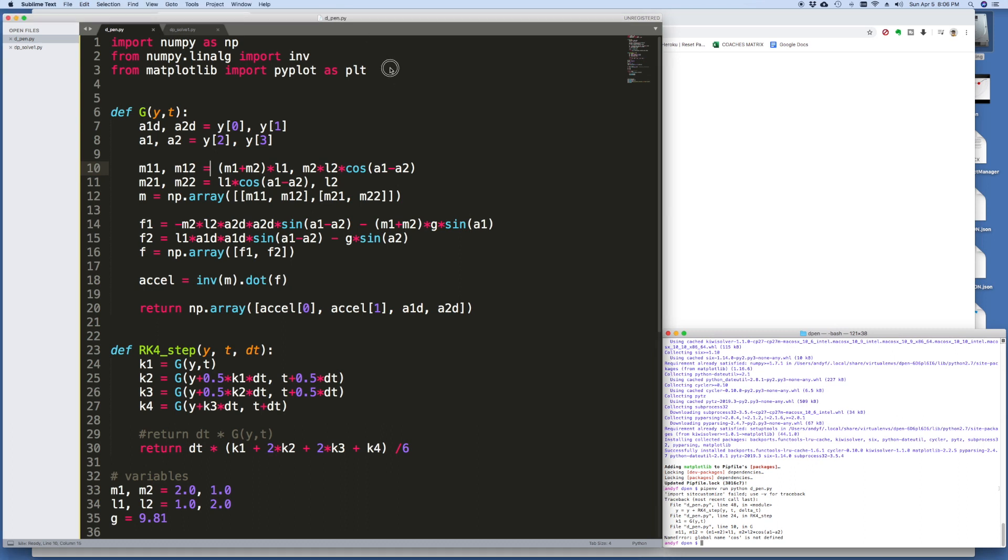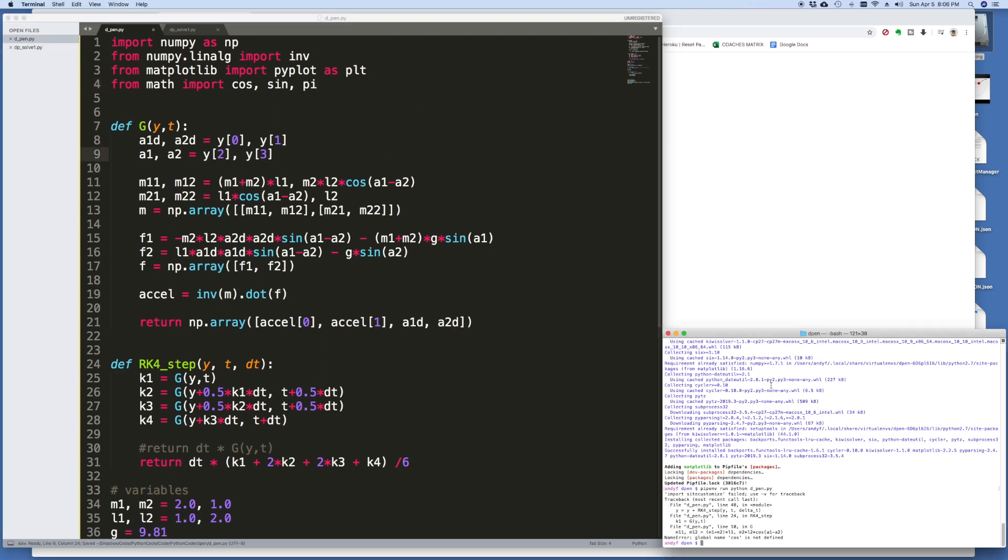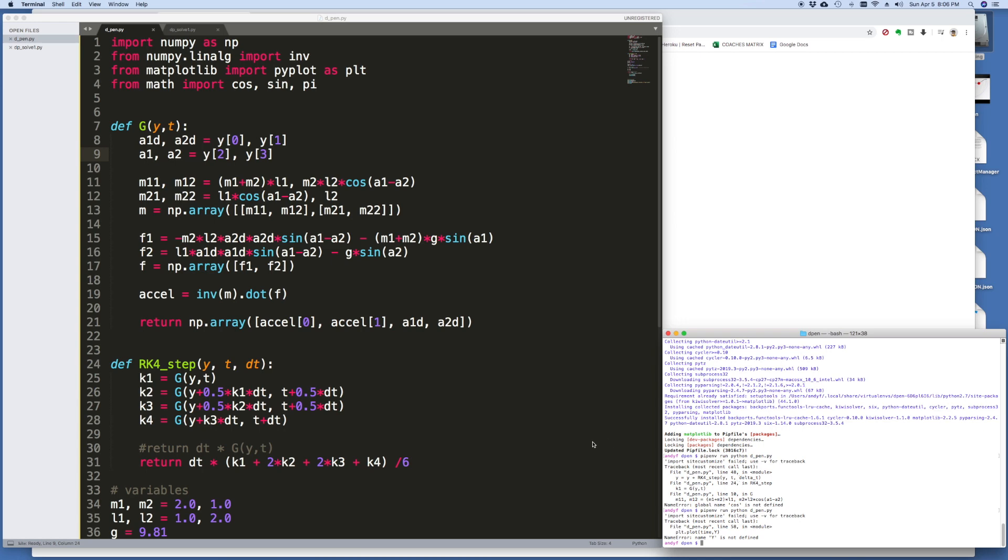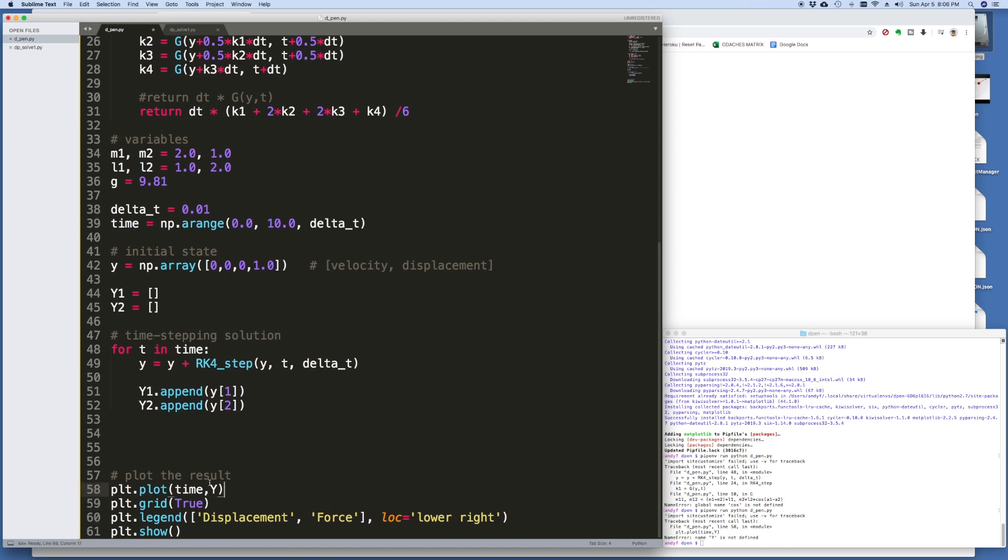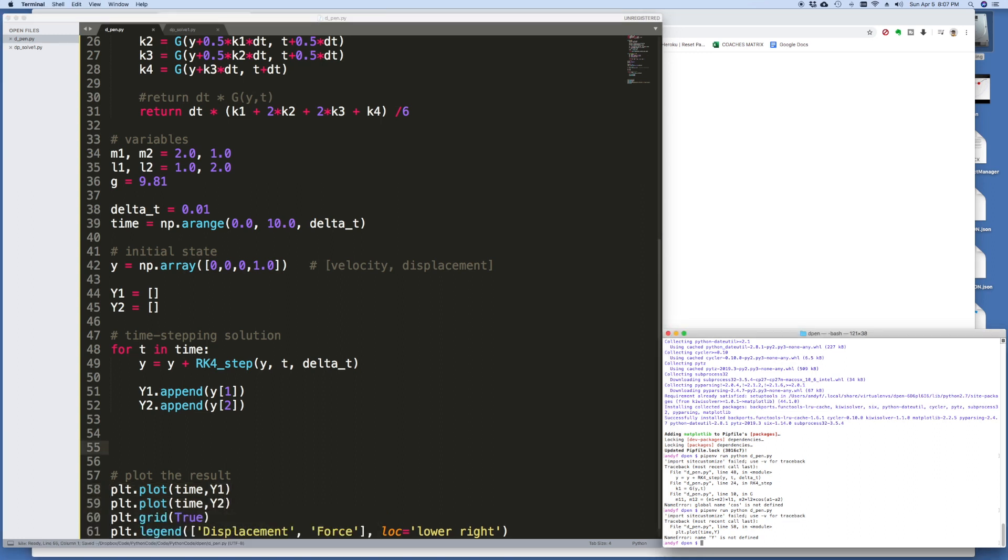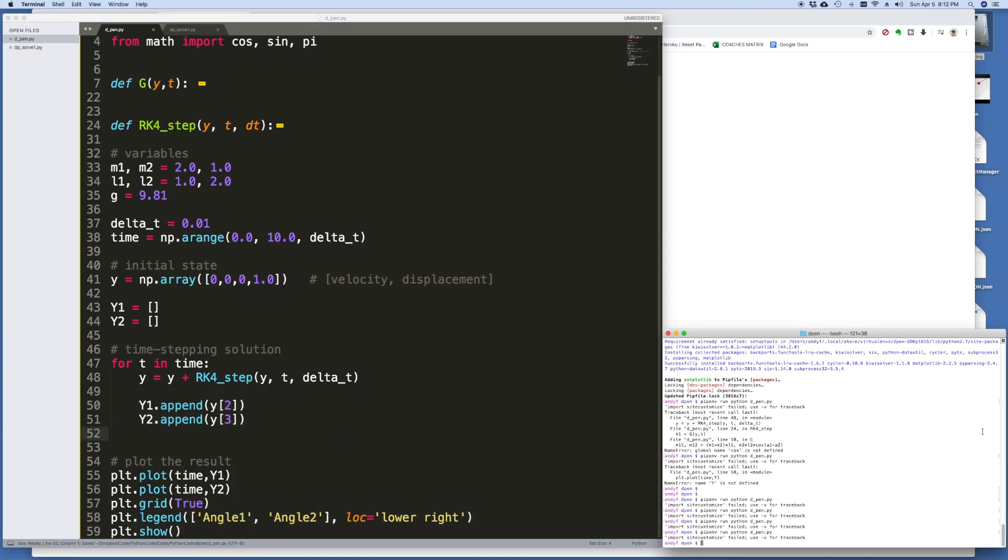Cosine is not defined. We need to import that. So from math import cosine, sine, we'll probably also need pi. Let's get that too while we're at it. Down here with the plotting, obviously we've got to change that. Y is now Y1, and in addition to Y1 on the same set of axes, let's also plot Y2 while we're at it. I'm just realizing I've appended the wrong things here—there should be two and three. Y2 and Y3 are the angles. And down here we can call it angle one and angle two. Let's run that again.